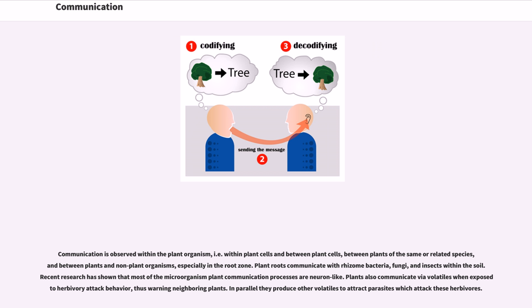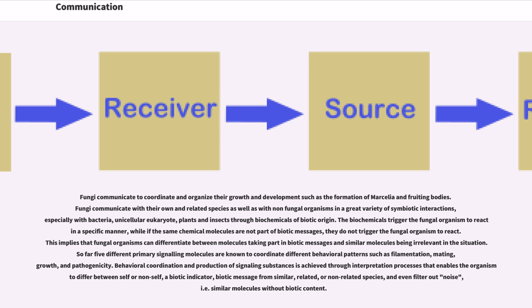Fungi communicate to coordinate and organize their growth and development, such as the formation of mycelia and fruiting bodies. Fungi communicate with their own and unrelated species, as well as with non-fungal organisms in a great variety of symbiotic interactions, especially with bacteria, unicellular eukaryotes, plants, and insects through biochemicals of biotic origin. The biochemicals trigger the fungal organism to react in a specific manner, while if the same chemical molecules are not part of biotic messages, they do not trigger the fungal organism to react. This implies that fungal organisms can differentiate between molecules taking part in biotic messages and similar molecules being irrelevant in the situation.